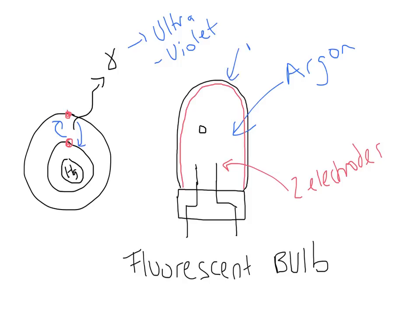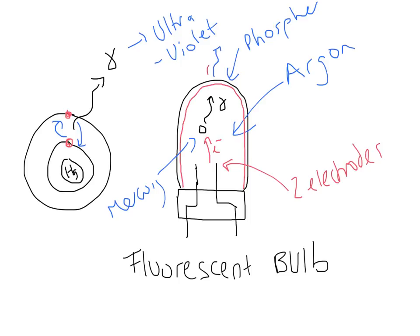So to summarize what happens: an electron between the electrodes causes the gas inside to become ionized, producing free electrons. A free electron collides with a vaporized mercury atom, producing a photon of ultraviolet light. This interacts with an electron in the phosphor layer, causing it to be excited. It de-excites, producing photons in the visible spectrum. Because it produces white light, it's producing all the colors of the visible spectrum, and you get lots of light output.